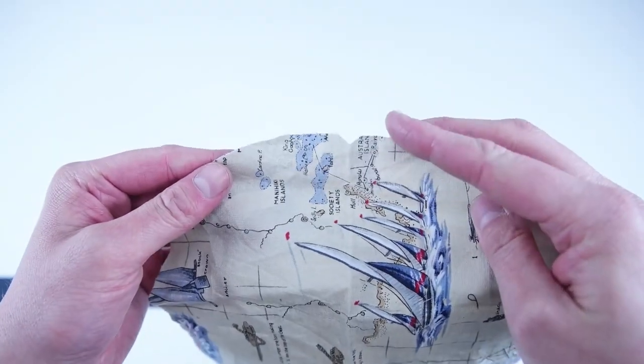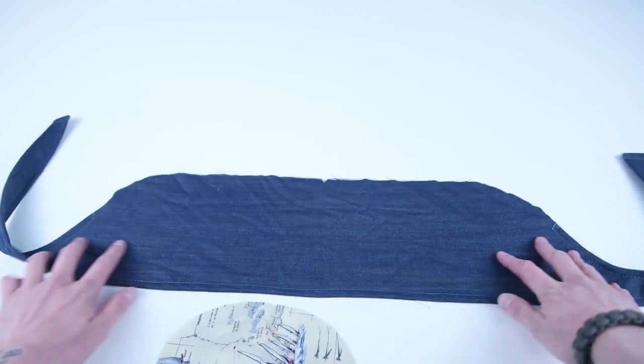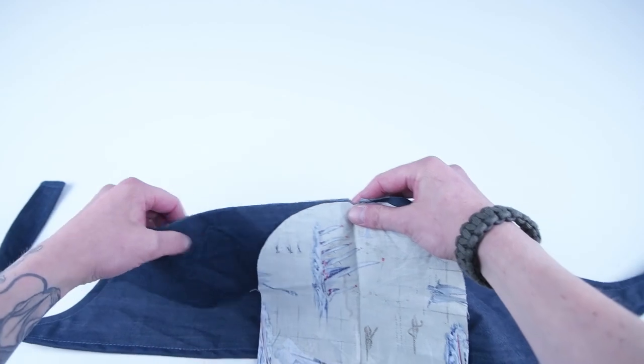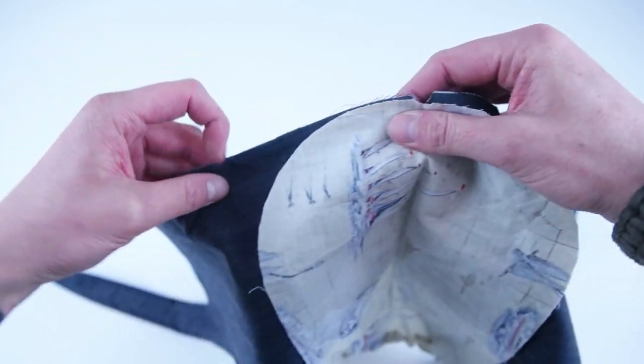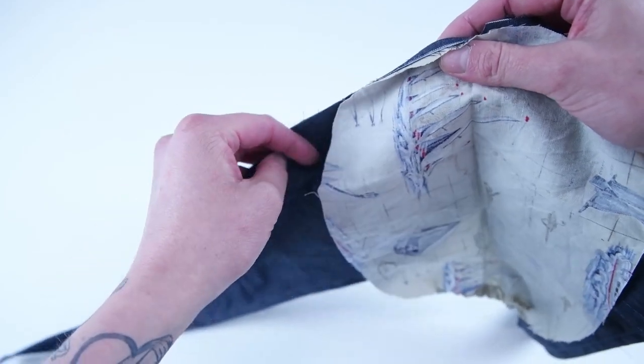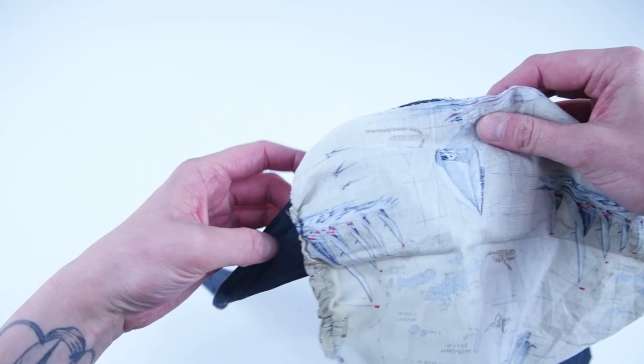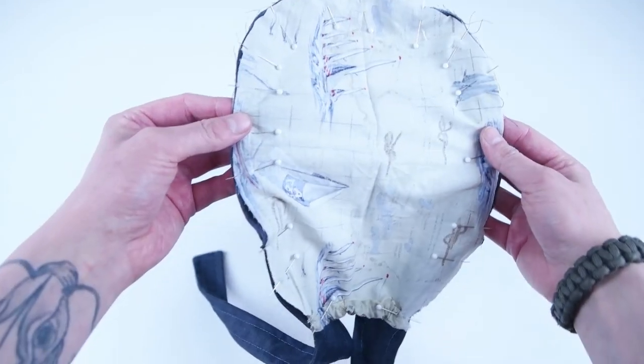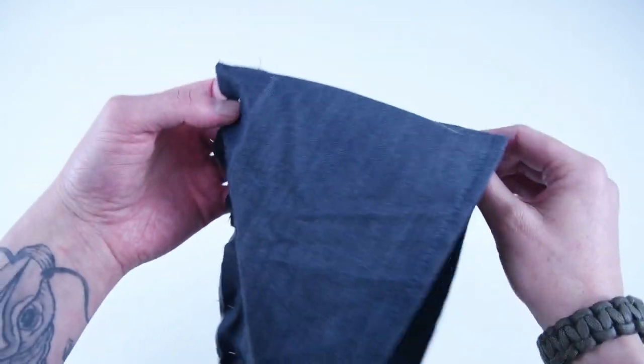Grab your top main panel and your side main panel and what we're going to do is line up the notches and pin all the way around the outside edge. And the easiest way to do this is start from the middle notch and pin towards the left side and then pin back towards the right side. And keep in mind the top panel should go past the side sew marks on the side main panel.